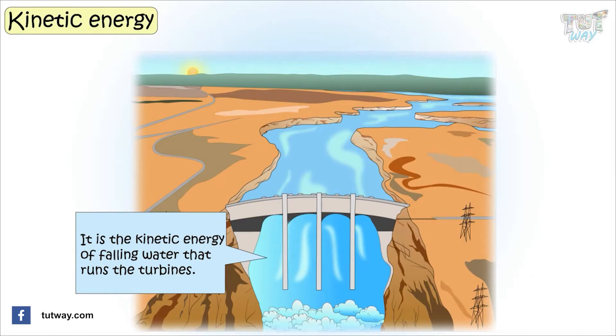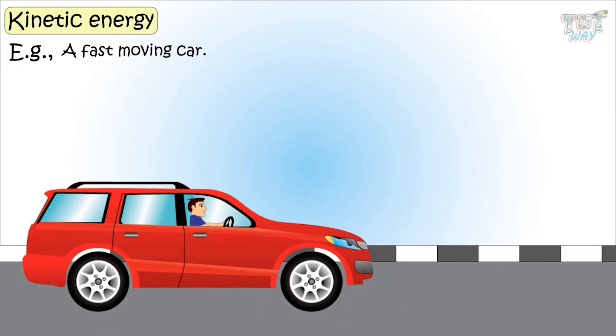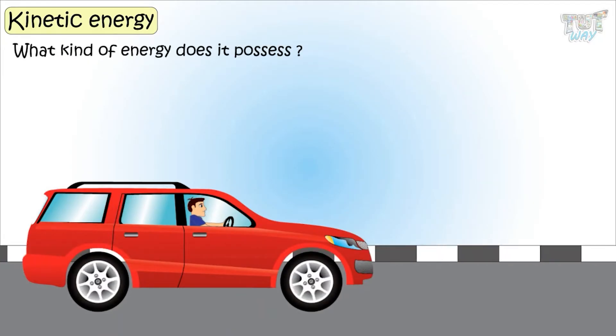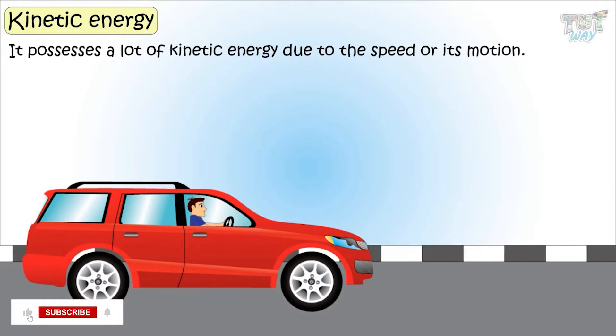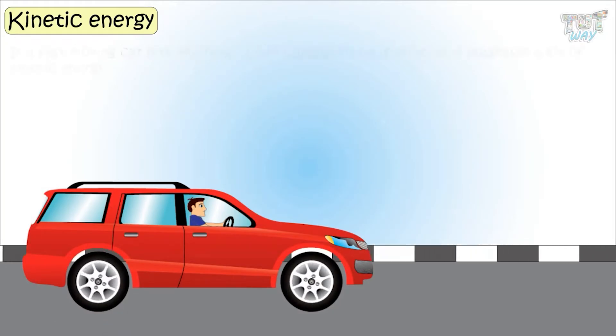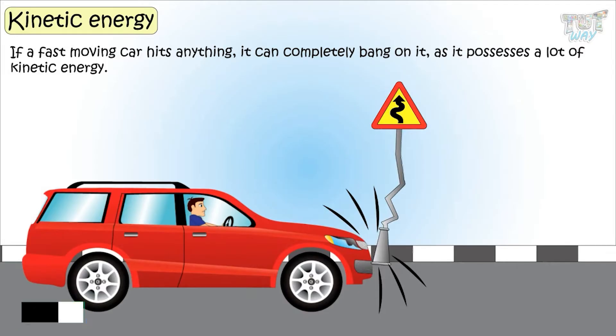Here is another example: a fast-moving car. What kind of energy does it possess? It possesses a lot of kinetic energy due to its speed or motion. A fast-moving car, if it hits anything, can completely bang into it as it possesses a lot of kinetic energy.